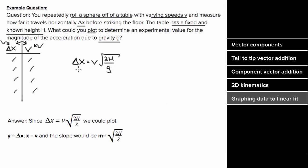It's easiest to make the left-hand side our y, since it's already solved for delta x. So the y quantity on our vertical axis is just delta x — one of the quantities we're varying. Similarly, the other varying quantity is v, so we call v our x, meaning the horizontal axis is v.